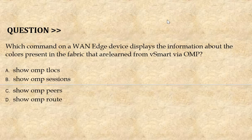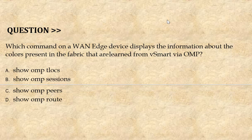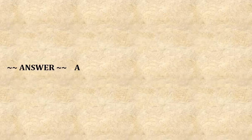Our next question is: which command of a WAN edge device displays the information about the colors present in the fabric that are all learned from VSmart via OMP? Option A.